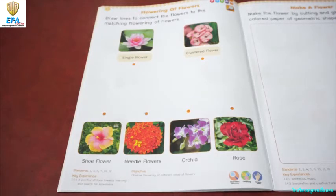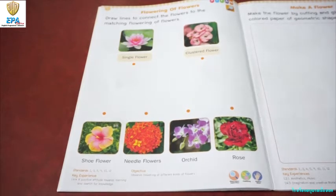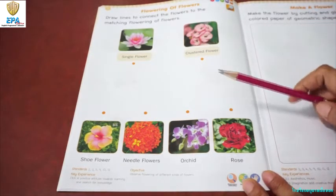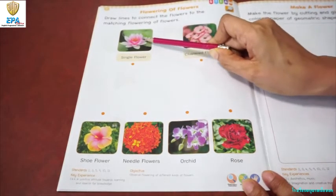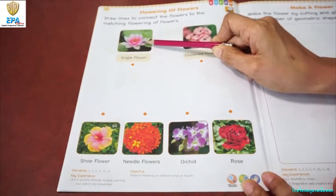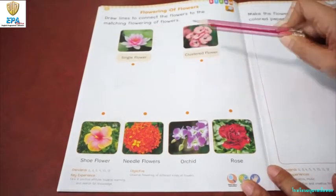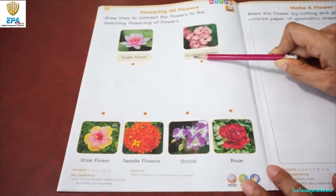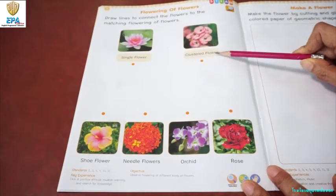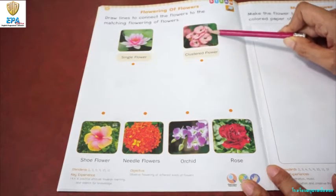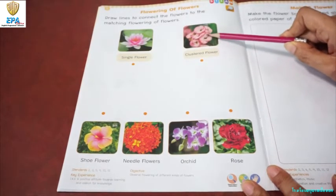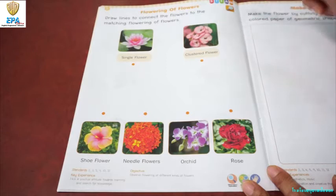We have what we call a single flower, just like this one. When we say single flower, it is an only flower — one flower in one stem. And when we say clustered, this one is a clustered flower. It looks like this — so many flowers in a single stem.